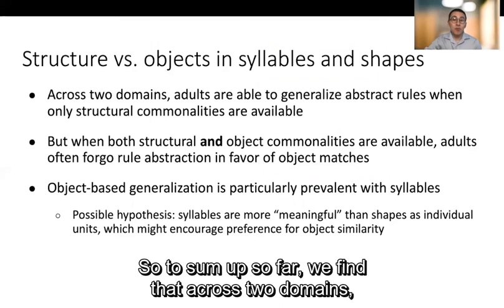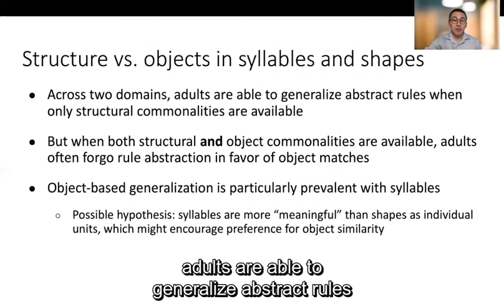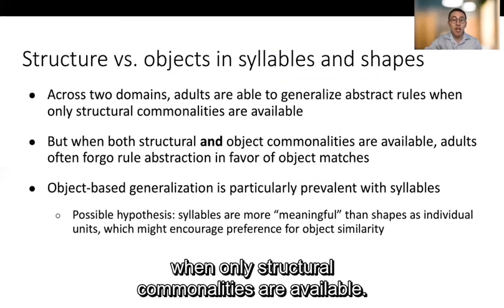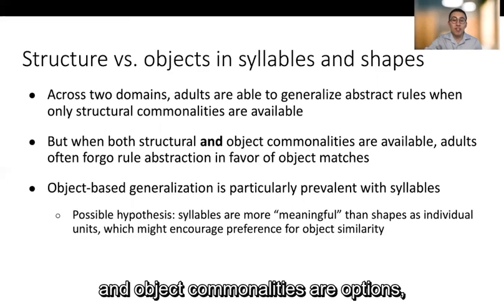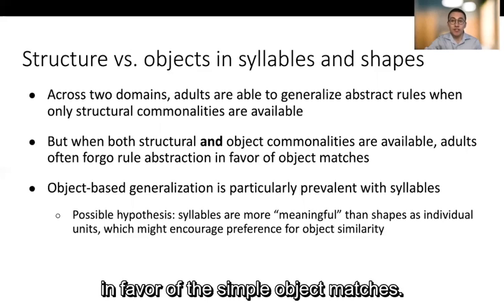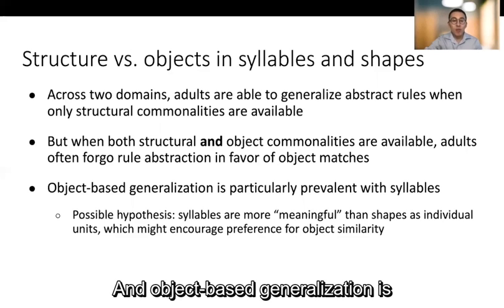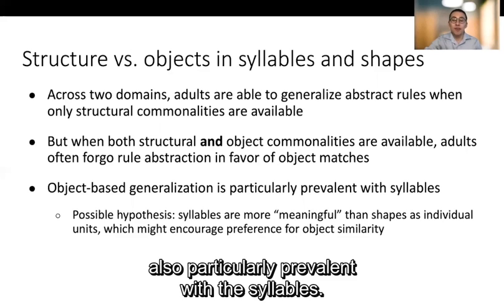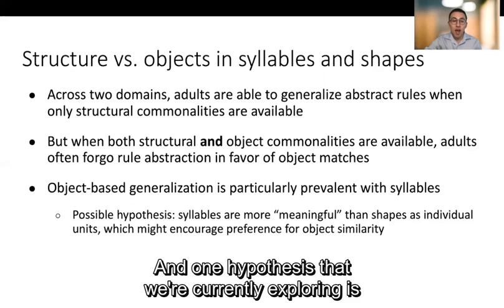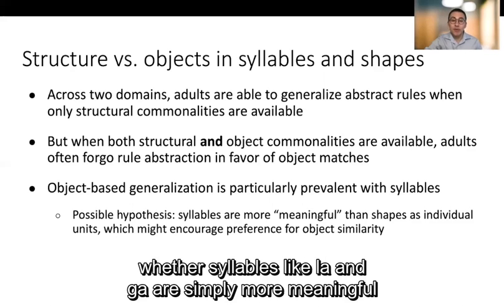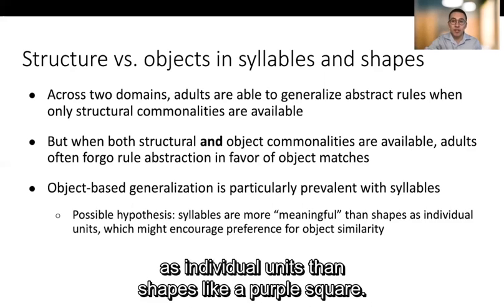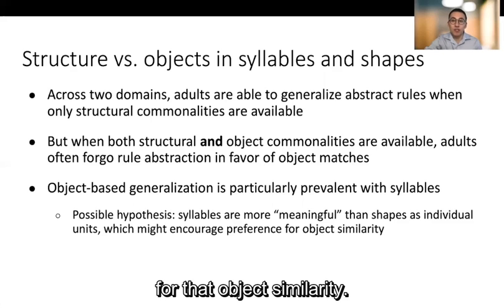So to sum up so far, we find that across two domains, adults are able to generalize abstract rules when only structural commonalities are available. But when both structural and object commonalities are options, adults often forgo that rule attraction in favor of the simple object matches. And object-based generalization is also particularly prevalent with the syllables. And one hypothesis that we're currently exploring is whether syllables like la and ga are simply more meaningful as individual units than shapes like a purple square, and this might encourage the preference for that object similarity.